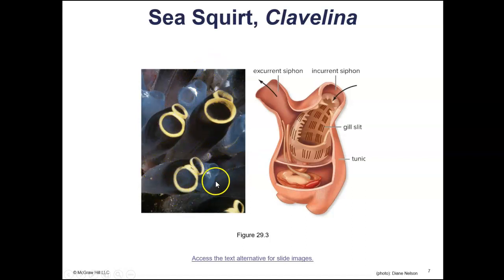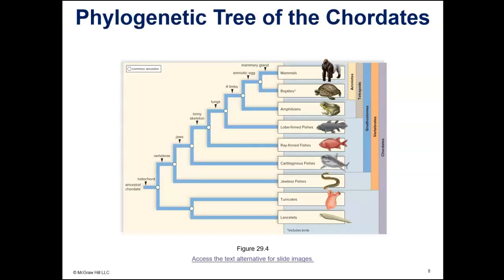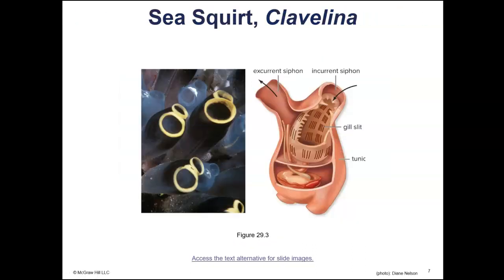You can see an illustration of the tunicates. Although the sea squirts don't look like much, they do have bilateral symmetry.